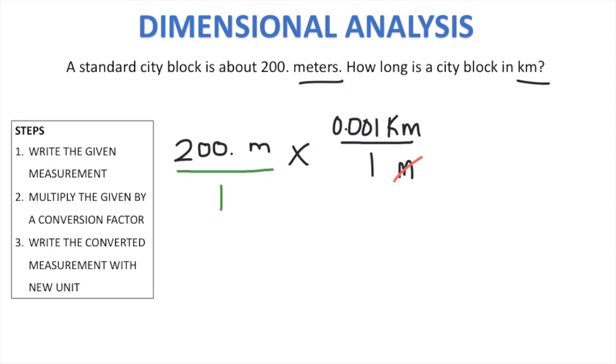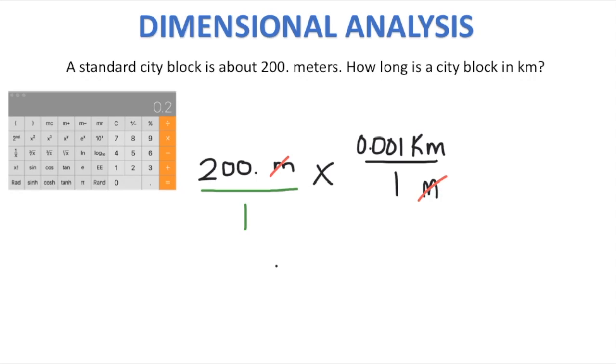Okay, let's put this into our calculator. 200 times 0.001 over one is equal to 0.200. The old unit cancels and we are left with the new unit of kilometers.